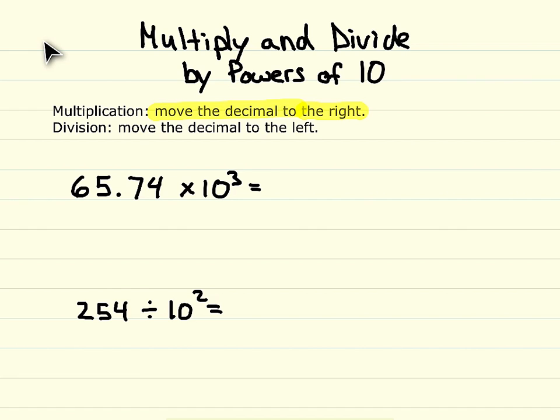And then with division, you need to move the decimal to the left, because when you divide, you want to get a smaller number, and moving the decimal to the left will give you a smaller number. So move the decimal to the left with division.